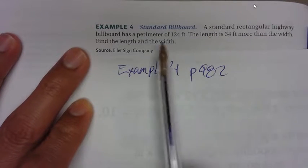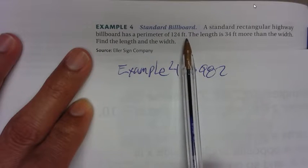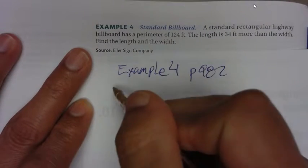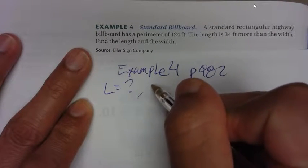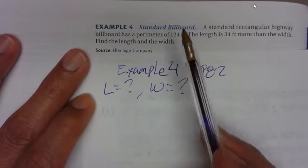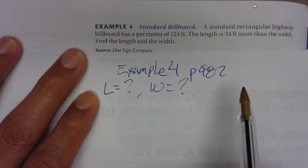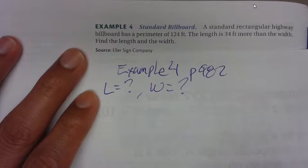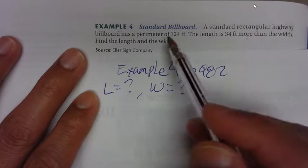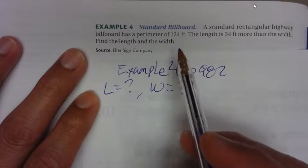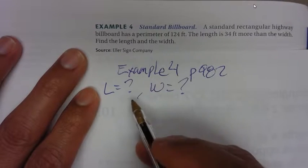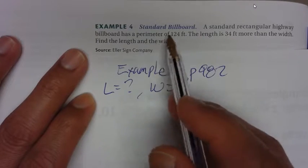The problem is: a standard rectangular highway billboard has a perimeter of 124 feet. The length is 34 feet more than the width. Find the length and the width. I'm missing both the length and the width — two variables — so that's a hint. Setting up the equation is one of the hardest parts of a word problem, and that's one of the key components.